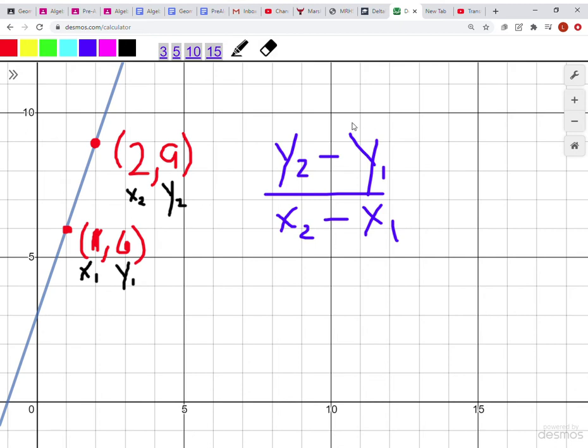All we got to do is substitute in what we labeled our points as. Y2 we labeled as 9, y1 we labeled as 6, x2 is 2, and x1 is 1. So we have 9 minus 6 is 3, and 2 minus 1 is 1.